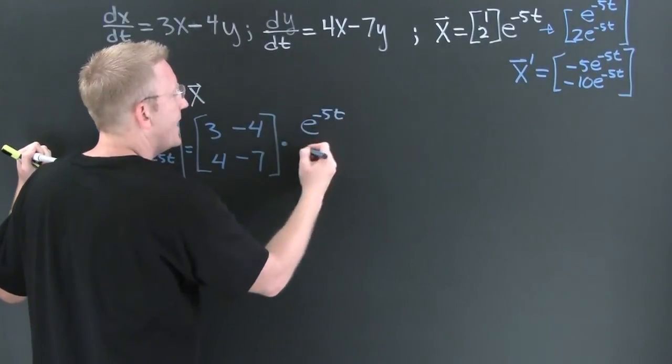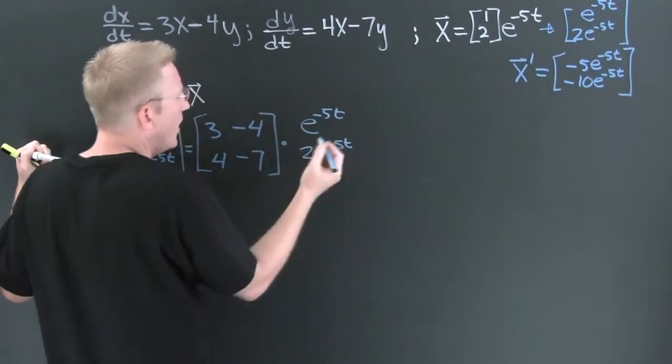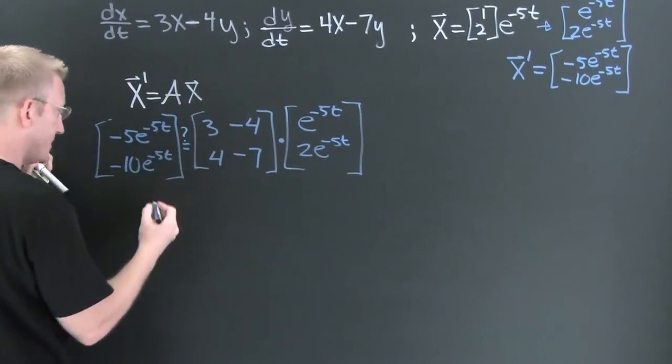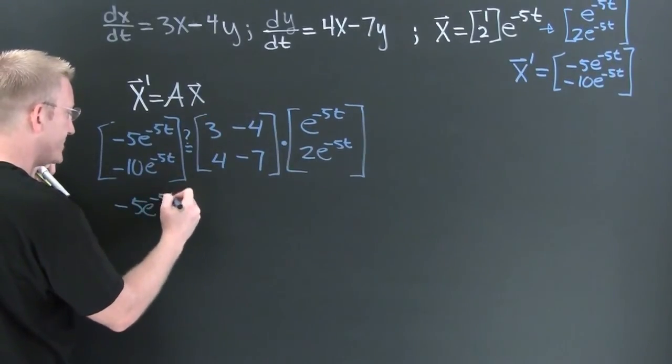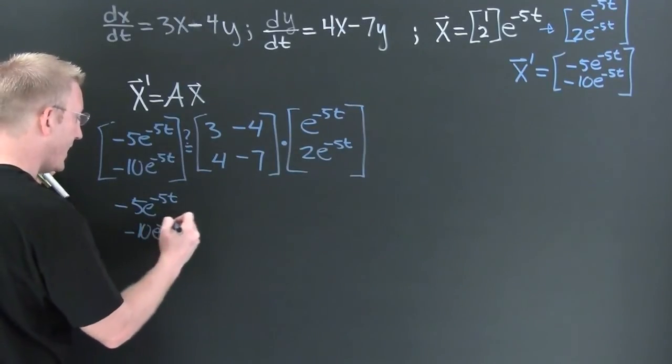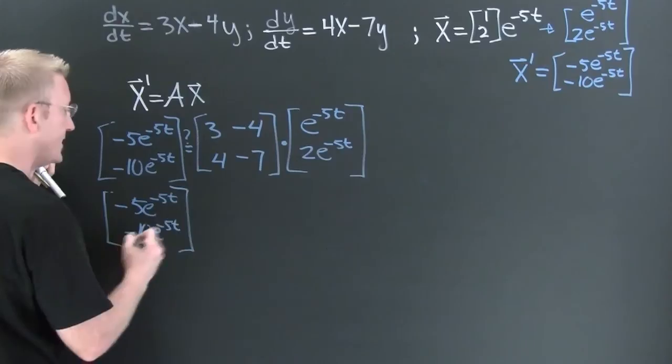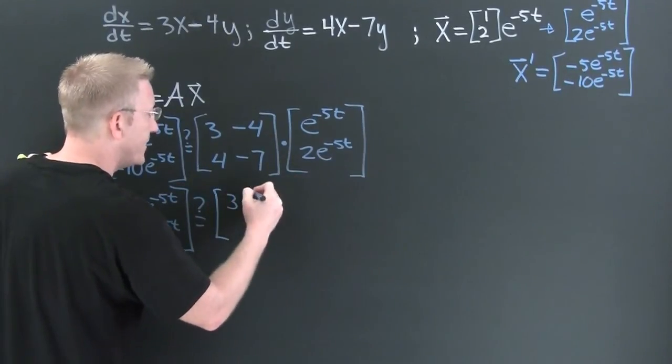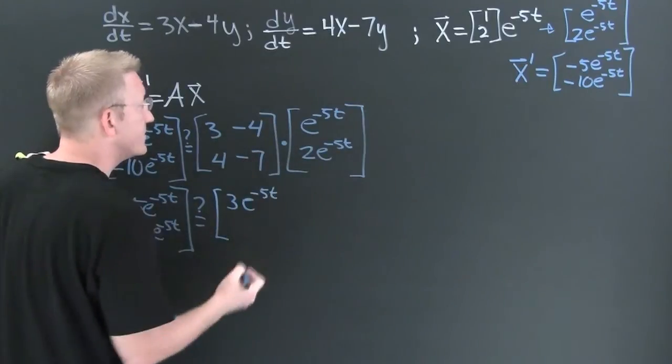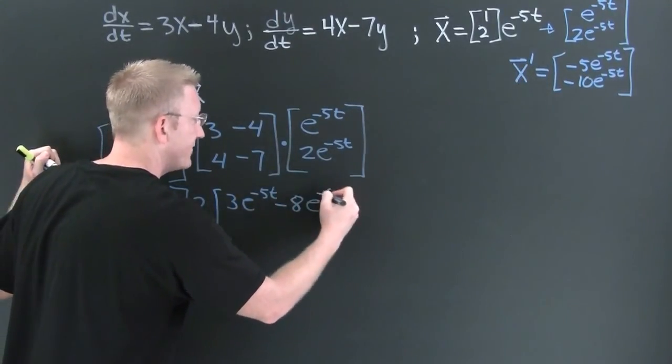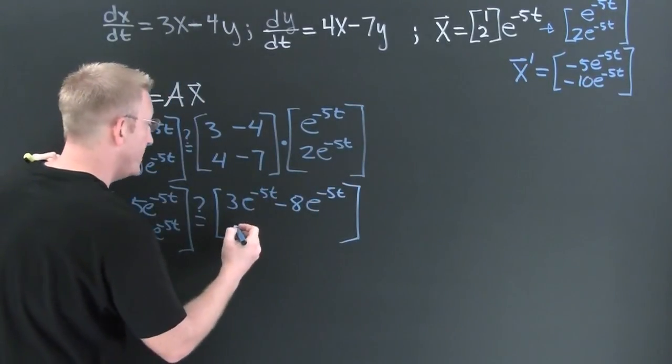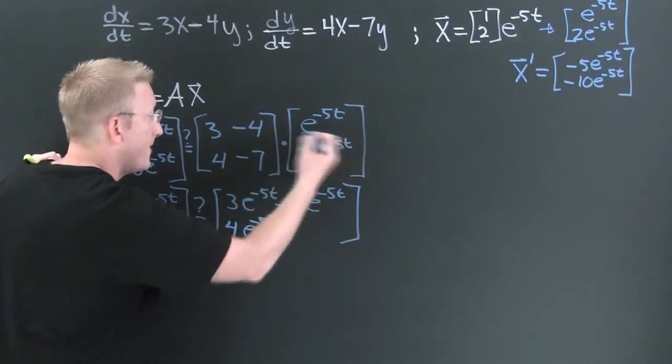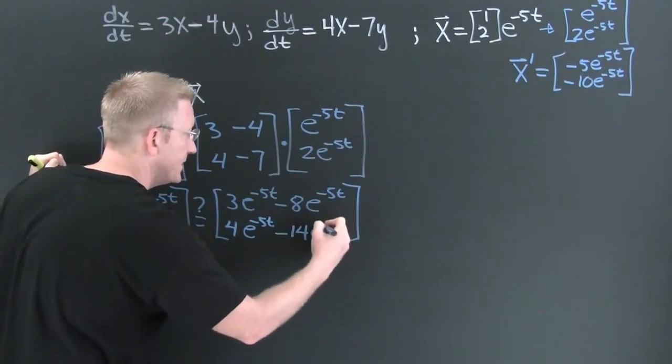E to the minus 5t, and 2e to the minus 5t. Let's perform this multiplication. We want to know, are those the same? Let me see. Minus 5e to the minus 5t, and minus 10e to the minus 5t. Yes. Is that the same as 3e to the minus 5t, 2 times 4 is minus 8e to the minus 5t. And then my second row in my multiplication is 4e to the minus 5t, minus 14e to the minus 5t.